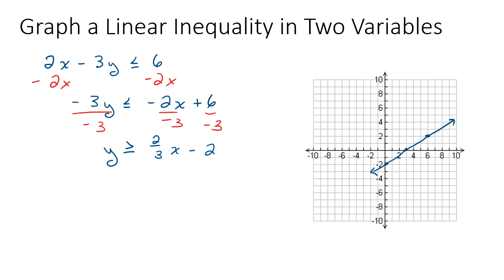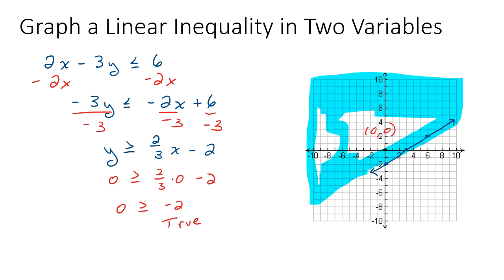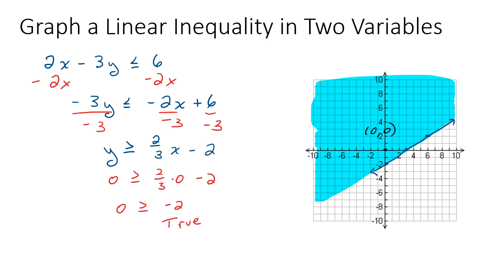I pick the test point (0, 0) because the numbers are nice. I put 0 in for x and 0 in for y and get 0 is greater than or equal to negative 2. That's true — 0 is greater than negative 2. So my solutions are going to lie in the half plane that includes the point (0, 0). A lot of people take their pencils and shade like this; you could use a highlighter as well.